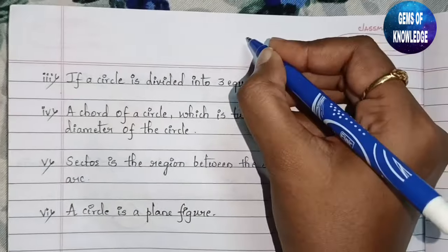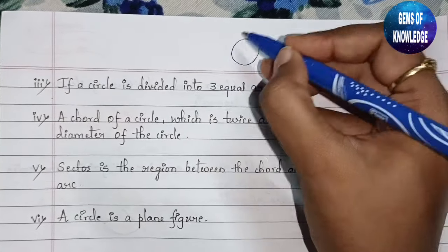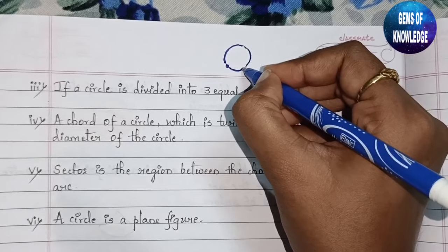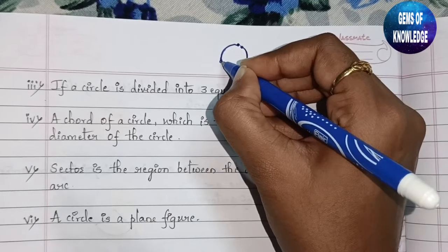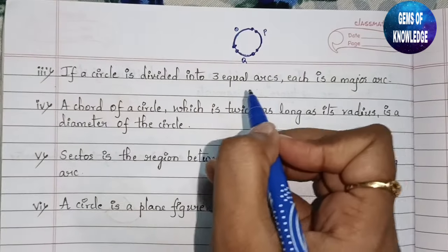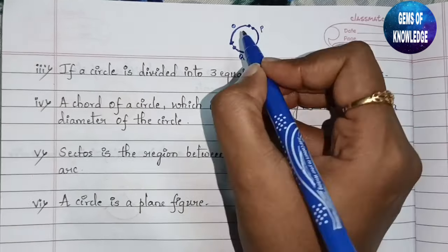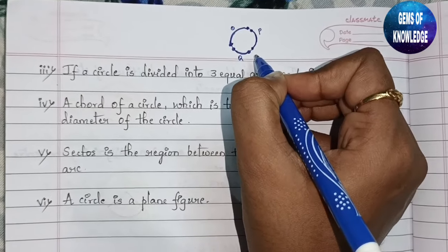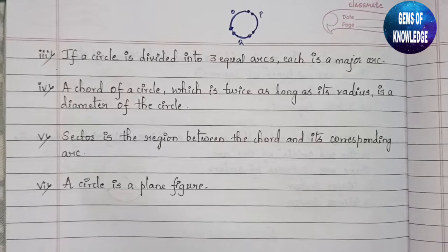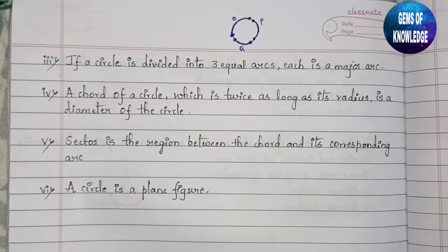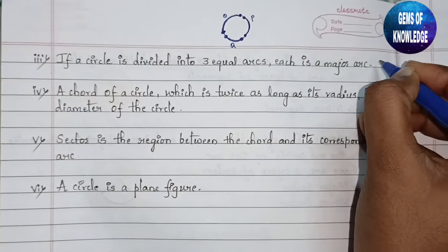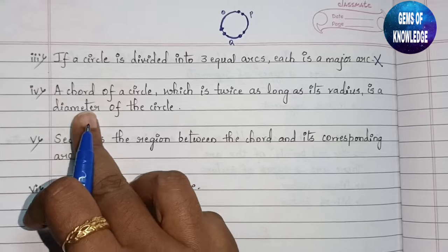Next: if a circle is divided into three equal arcs, each is a major arc. Suppose this is a circle divided into three arcs — arc one, arc two (P), and arc three (Q). Can we say any one is a major arc? No. If divided equally into three parts, we cannot call any one major or minor, because major means larger area and minor means lesser area. So the answer is false.